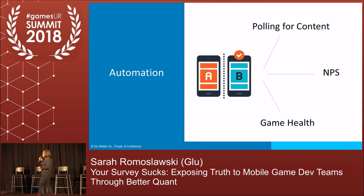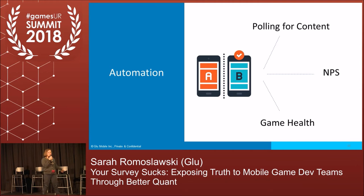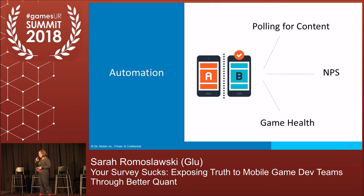For automation, think about what you can do in advance. If you want to take Net Promoter Score every two weeks, or poll for content, or create custom scales to assess game health, think about what you want to do this year and set it up in your campaign tools. Tell the team you'll do it yourself, because the last thing a team wants is to hear that user research is going to be more work for them.